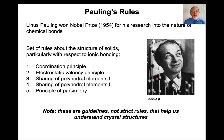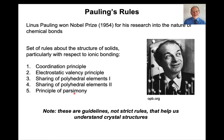Linus Pauling won the Nobel Prize for his research into the character of chemical bonds. He has five different rules: coordination, electrostatic valency, sharing of polyhedral elements one and two, and the principle of parsimony. I want to emphasize these are guidelines — they're called Pauling's rules, but they're not strict rules. Regardless, they help us understand crystal structures.